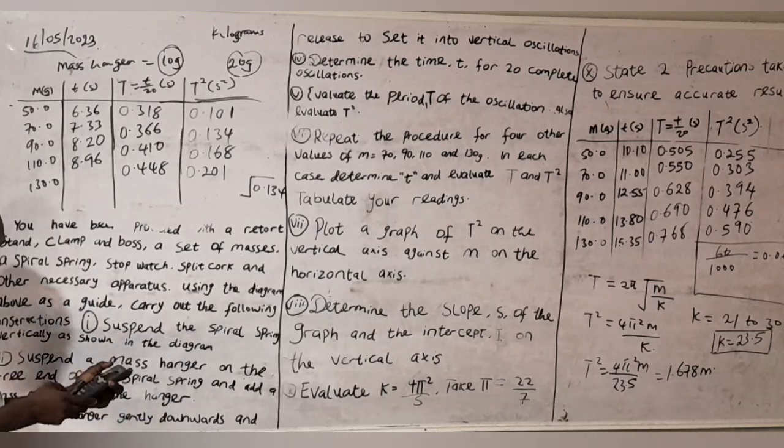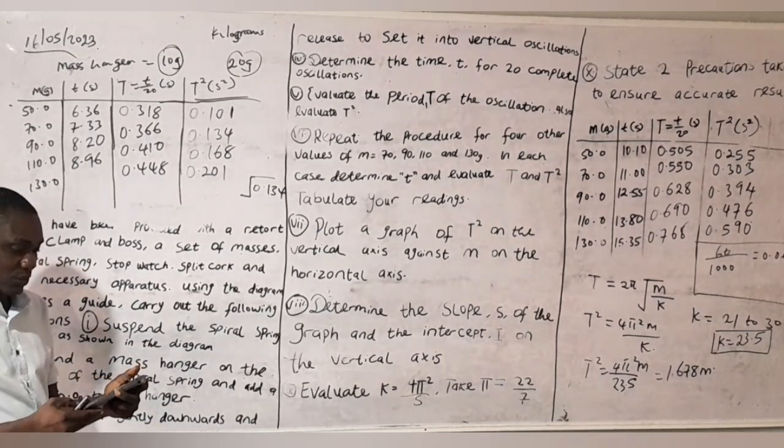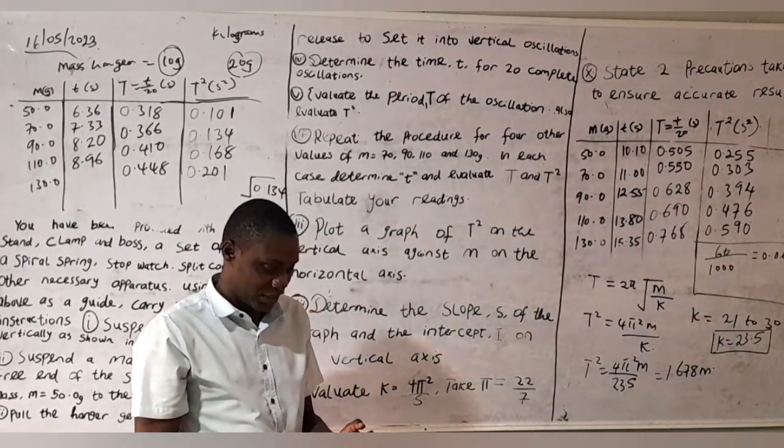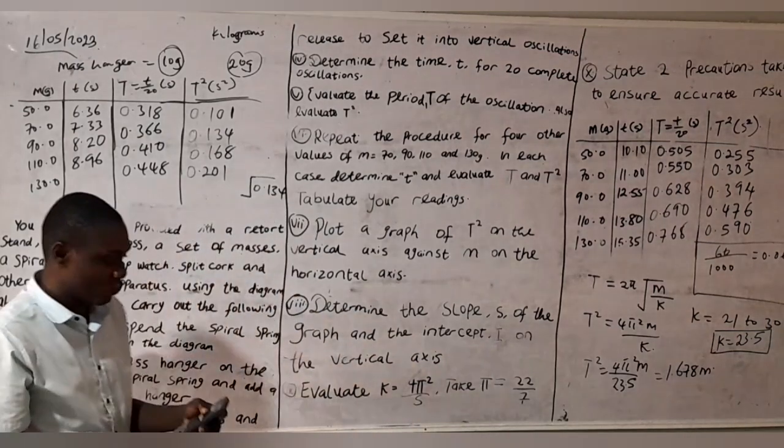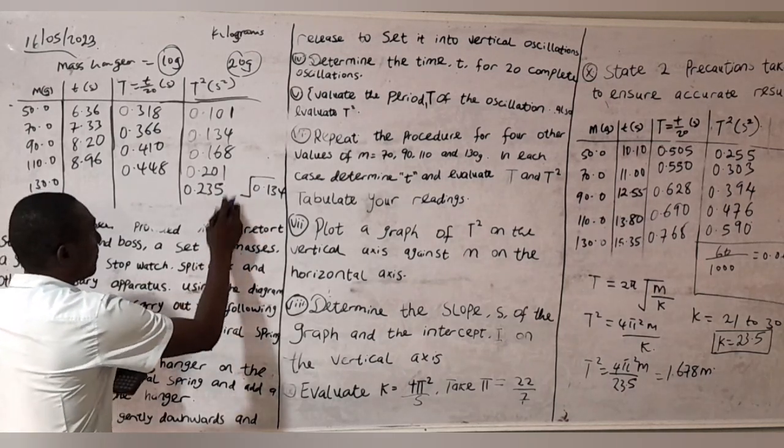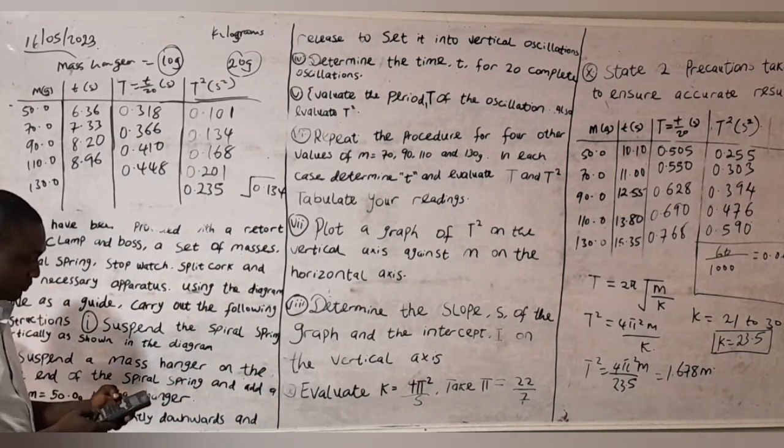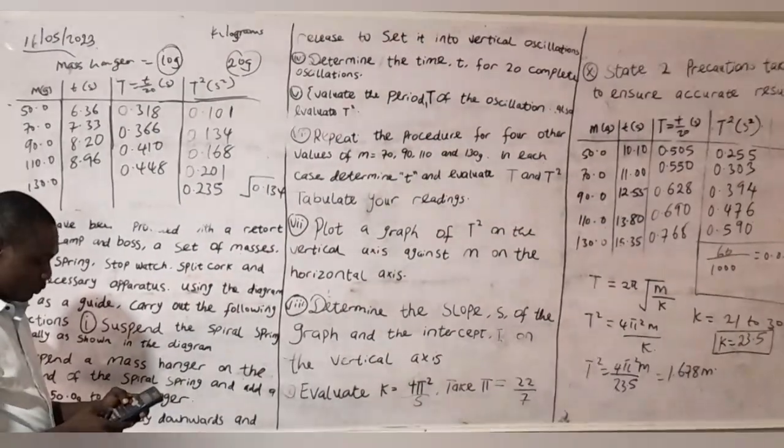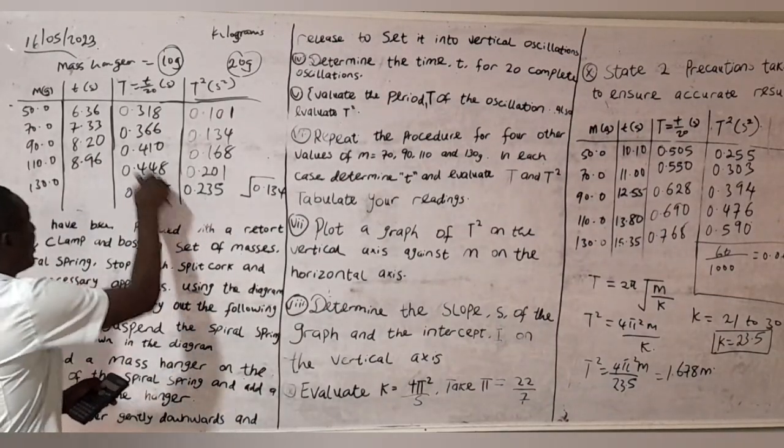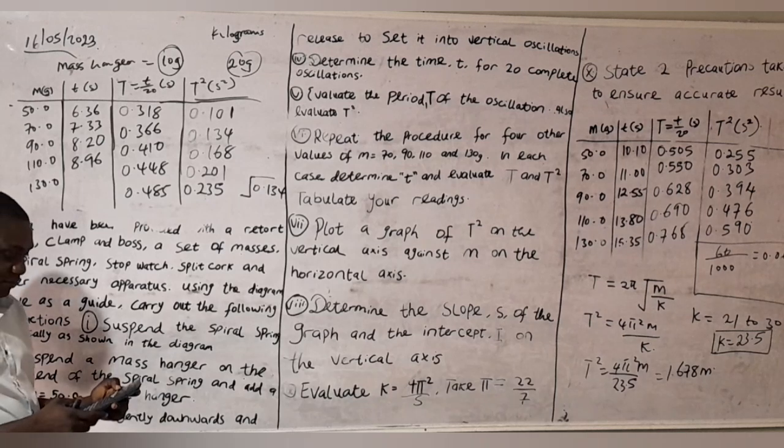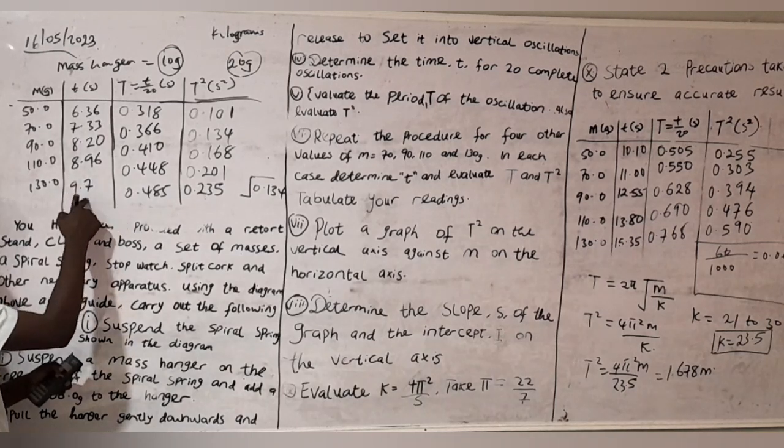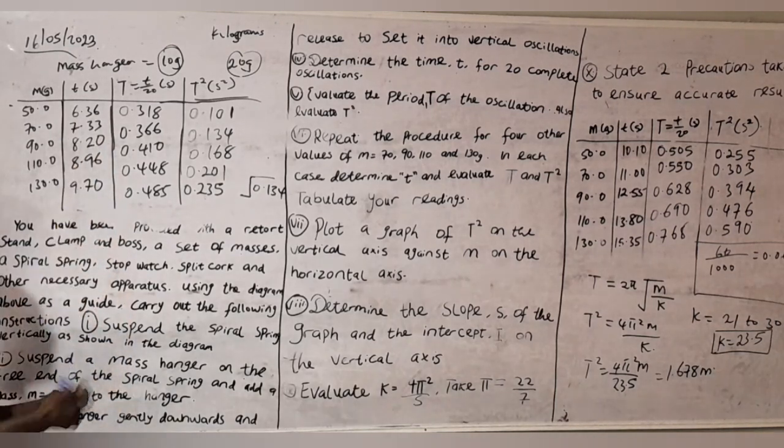For the last one I'll add 10 to 140. 140 divided by 1000 equals 0.14 times 1.678. That gives me 0.235. I'll take the square root of 0.235, which gives me 0.485. Then I'll multiply this by 20 to get 9.70, so that all of them will be 2 decimal places.